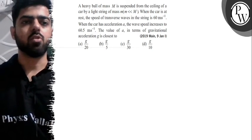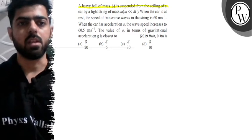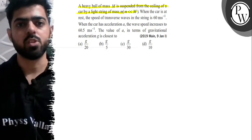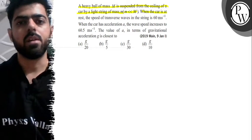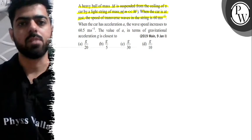Hello, let's read the given question. The question says a heavy ball of mass capital M is suspended from the ceiling of a car by a light spring of mass small m. Small m is much less than capital M. When the car is at rest, the speed of transverse wave in the string is 60 meters per second.